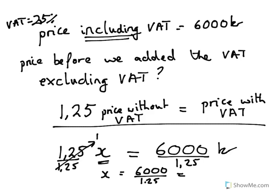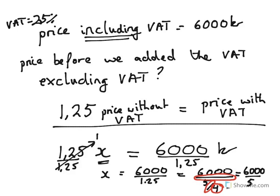1.25 is exactly the same as 5 divided by 4. So 6,000 divided by 5/4 — using the double-divide rule, the denominator goes to the top and multiplies through. 5 into 6,000: 5 into 60 goes 12 times, two zeros, giving 1,200. Then 1,200 times 4 equals 4,800 kronos. So the original price before VAT was 4,800 kronos.